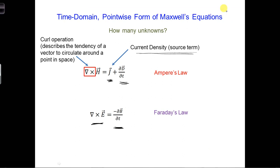At first, it may appear that there are four unknowns: H, D, E, and B. But we only have two equations, Ampere's and Faraday's law here, to solve for these four unknowns.